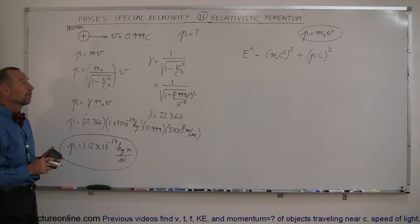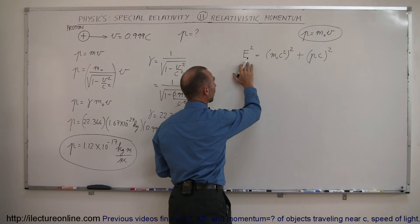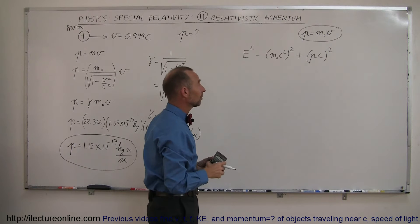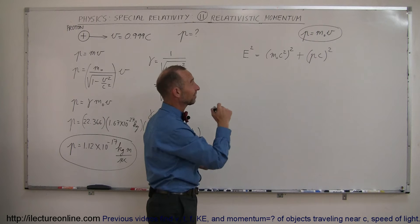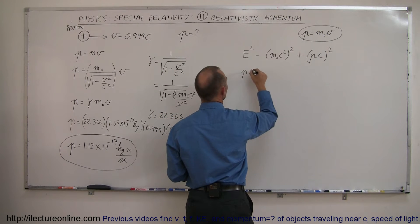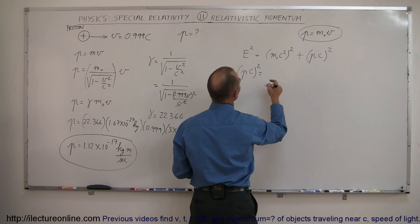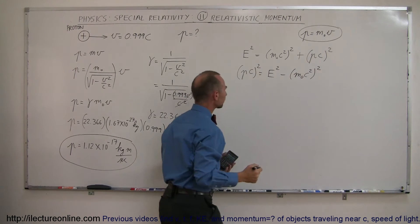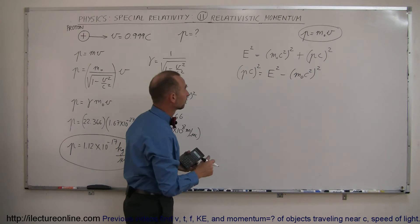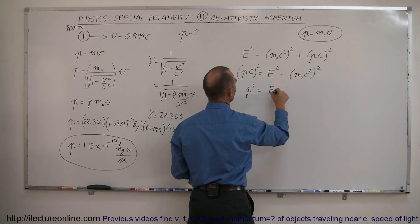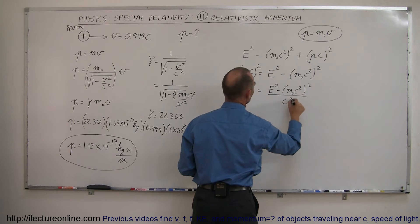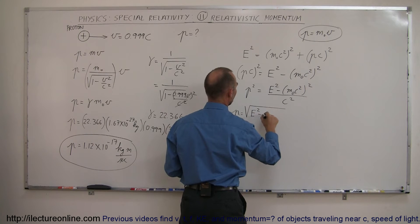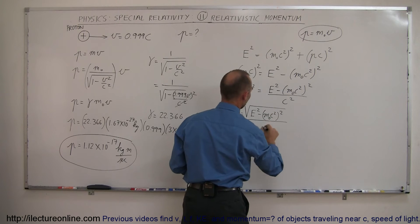It turns out there's actually a second equation for relativistic momentum. This one says that the total energy of a particle squared equals the rest mass squared plus p times c, quantity squared — p being the relativistic momentum, c being the speed of light. To isolate p: pc quantity squared equals E-squared minus (m-sub-naught c-squared) quantity squared. Dividing both sides by c-squared gives p-squared equals E-squared minus (m-sub-naught c-squared)² all divided by c-squared. Taking the square root, p equals the square root of E-squared minus (m-sub-naught c-squared)², all divided by c.